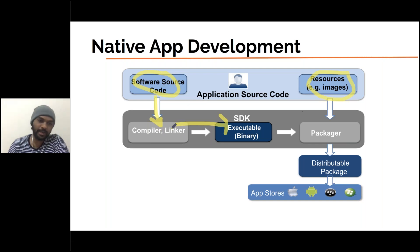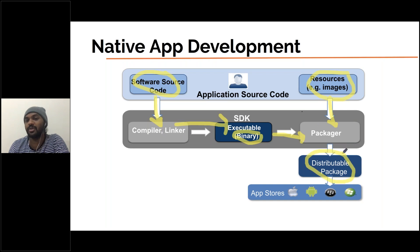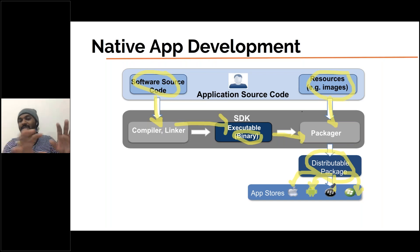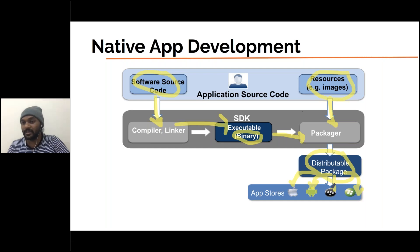The SDK generates a binary file, linked with the images. Once the distributed package is constructed, it goes to the corresponding store — if Apple, to the App Store; if Android, to the Play Store; if Windows, to the Windows Store; if Huawei, to the Huawei Store. This is the typical flow: you construct the source code, manage resources, compile and link through the compiler and linker, generate the SDK package, create the distributed package, and it automatically renders to the store.